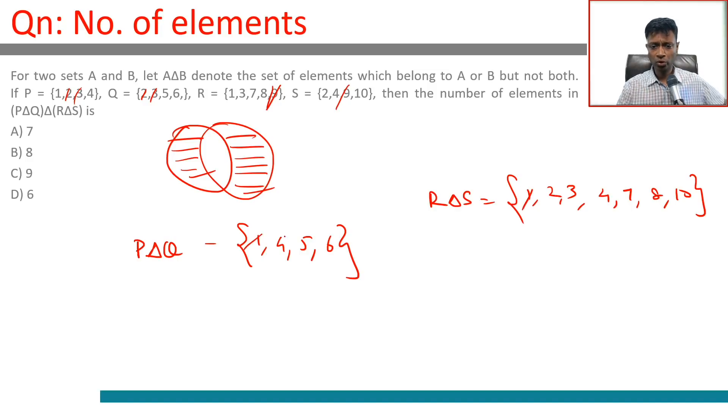From both, four is common, four goes away. Five is not common, six is not common. We have to go numerically: 2, 3, 5, 6, 7, 8, 10. One, two, three, four, five, six, seven elements. That's what we are looking for.